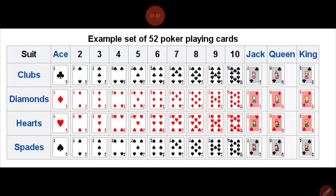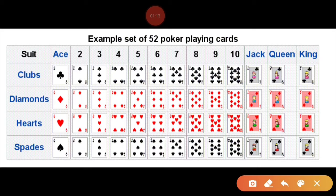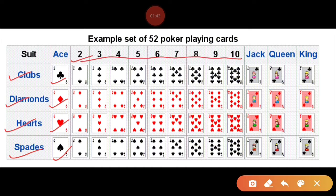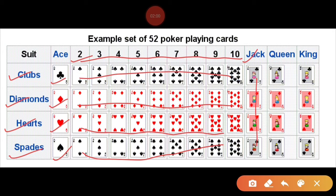Before we start solving this question, we will first understand our 52-card deck. The deck has cards from 2 to 10 in all four suits - clubs, diamonds, hearts, and spades. Then we have a jack - jack of clubs, jack of diamonds, jack of hearts, and jack of spades.